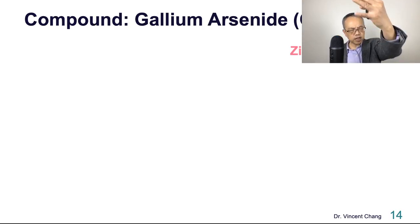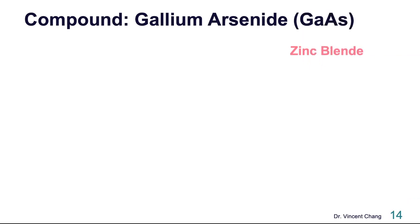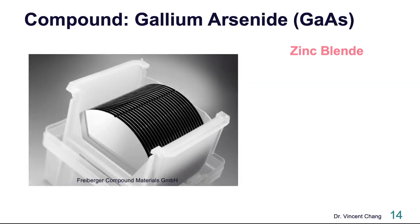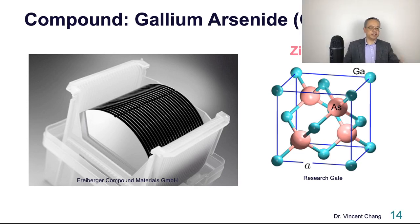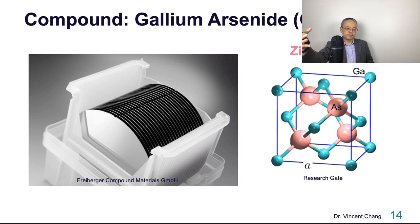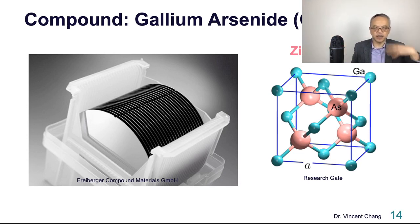Let's move on to another type of material called compound semiconductor. One example is gallium arsenide. The crystal structure of gallium arsenide is zinc blende. On the left-hand side is the gallium arsenide wafer, and on the right is the crystal structure. It's two FCC sub-lattices combined — one FCC from the gallium atom and another FCC from the arsenic atom — forming gallium arsenide.